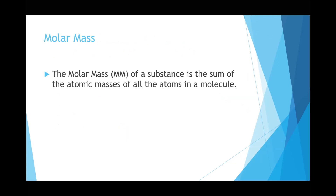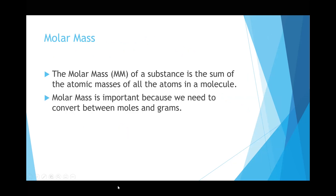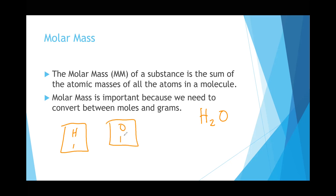Now let's talk about molar mass. We jumped into descriptive chemistry and now we'll go back to chemistry involving calculations. The molar mass of a substance is the sum of the atomic masses found on the periodic table, and it's important because that's how we convert between grams and moles. For example, H₂O — water: hydrogen has a mass of 1 and oxygen is 16. We have two hydrogens, so that's 2, and one oxygen, that's 16. The molar mass is 2 plus 16 equals 18 grams per mole.